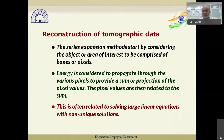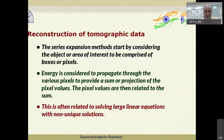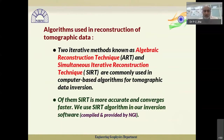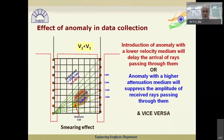We consider the area of interest to be comprised of boxes or pixels, then energy is considered to propagate through the various pixels providing a sum or projection of the pixel values. The pixel values are related to the sum — often requiring solving large linear equations with non-unique solutions. The two algorithms used in reconstruction of tomographic data are the Algebraic Reconstruction Technique (ART) and Simultaneous Iterative Reconstruction Technique (SIRT). We use SIRT because it is more accurate and convergence is much faster. The software we use was compiled and provided under the NIRM-NGI program by NGI.